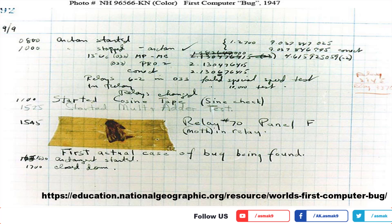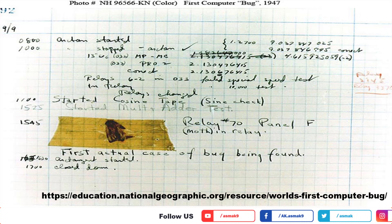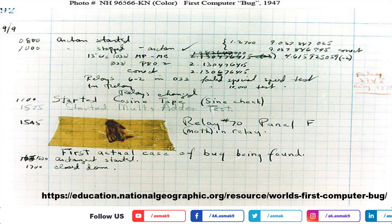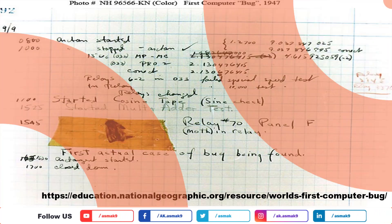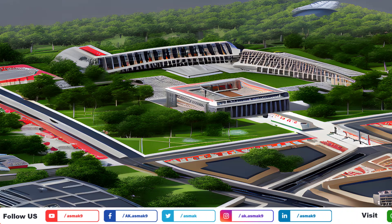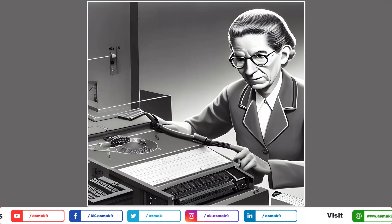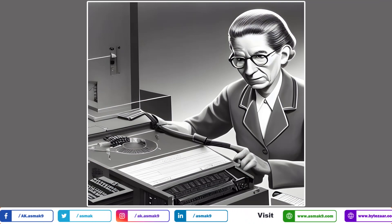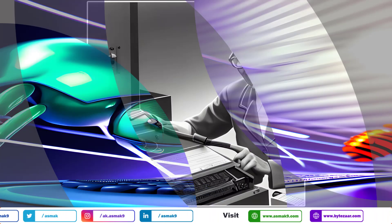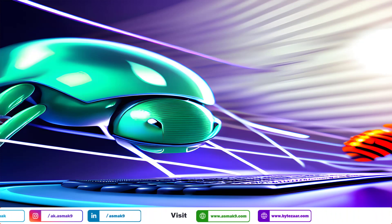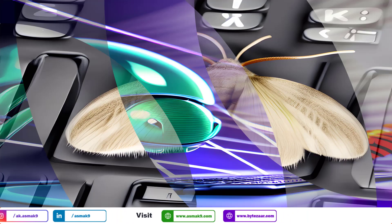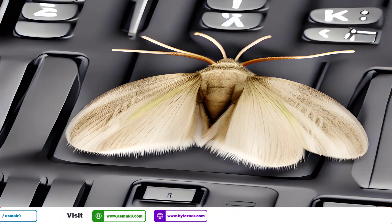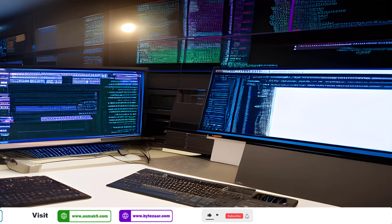After removing the insect from the hardware, someone from the engineering team taped the discovered moth in a logbook and wrote 'first actual case of bug being found,' which is considered the first computer bug in history. All of this happened in front of Dr. Grace Hopper, a pioneer computer scientist and retired Rear Admiral of the U.S. Navy, and this incident led to the discovery of the world's first ever recorded computer bug.